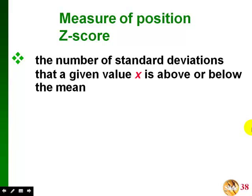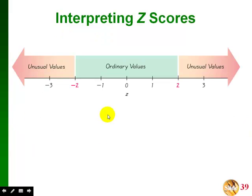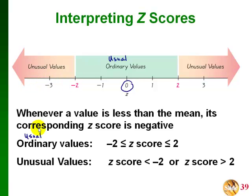A Z score is the number of standard deviations that a given value X is above or below the mean. If X is above the mean, the Z score is positive; if it's below the mean, the Z score is negative. If our value X equals the mean, then the Z score is zero. If X is one standard deviation more than the mean, the Z score is one; if it's one standard deviation less, the Z score is negative one. Our usual values are within two standard deviations of the mean, which means Z scores are between negative two and positive two. Unusual values are outside that range — they'll have Z scores less than negative two or greater than positive two.